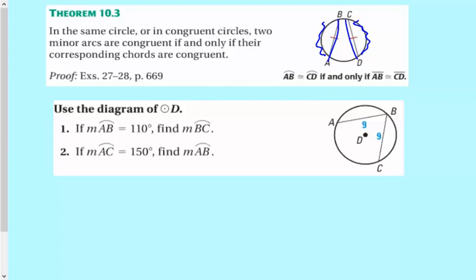Use the diagram of circle D. The measure of arc AB is 110 degrees. So the first thing that I notice here is that these two arcs are congruent in the same length. So BC also has to be 110.